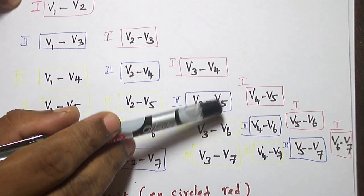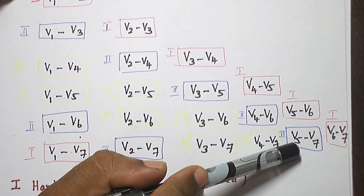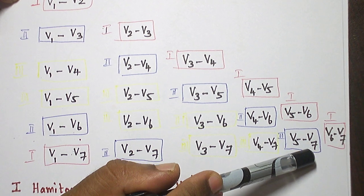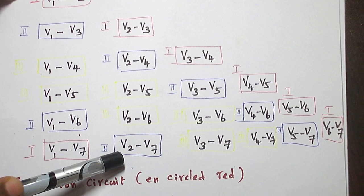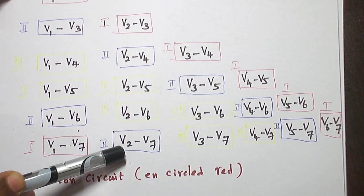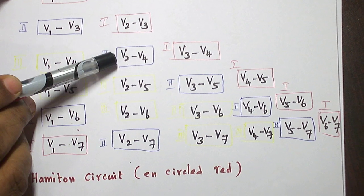Again, take an edge V5 to V7. Again, take an edge V7 to V2. Then, take an edge V2 to V4.